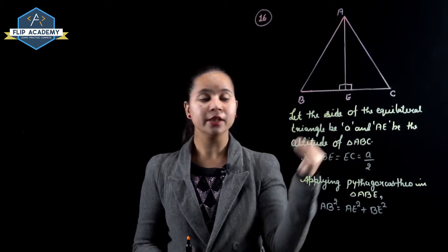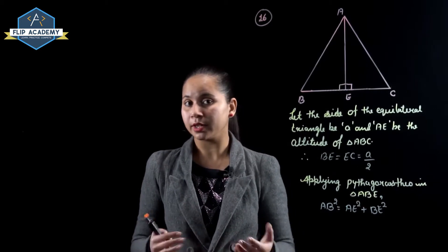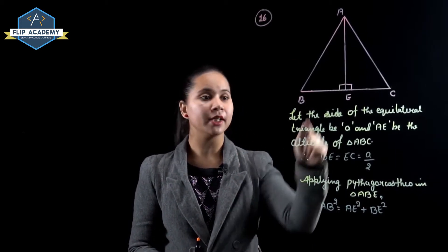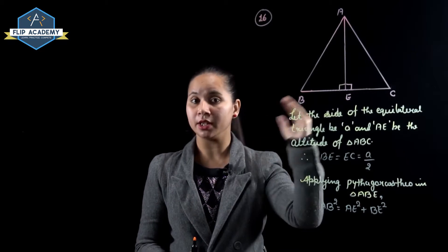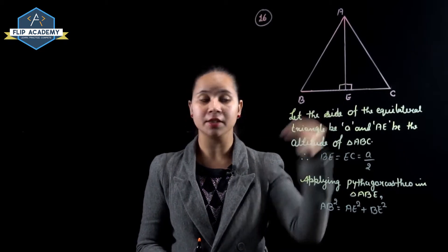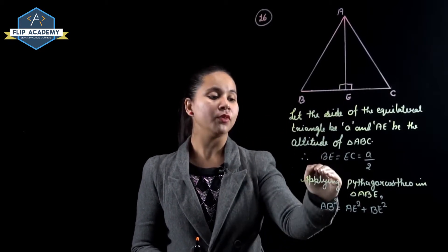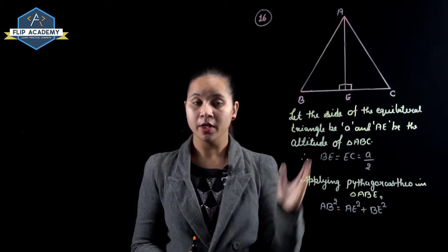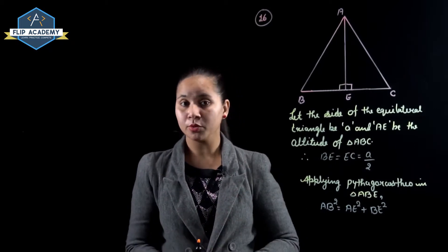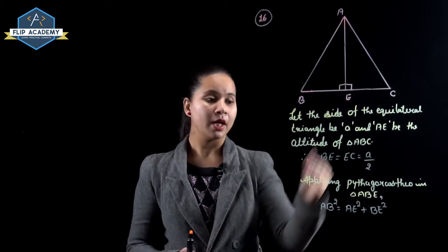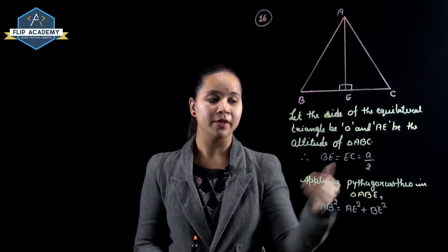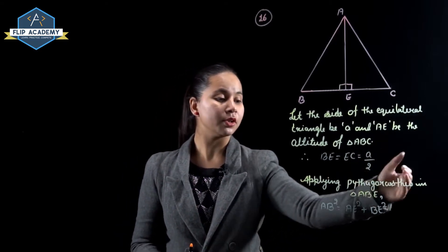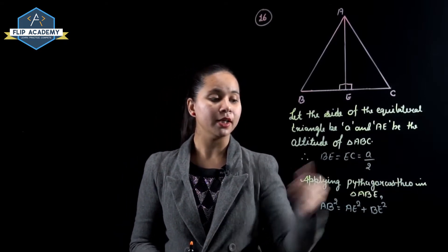BE equals EC equals A/2 because the altitude divides the side into 2 equal parts. Since BC has length A, dividing by 2 gives A/2. Applying the Pythagoras theorem in triangle ABE.